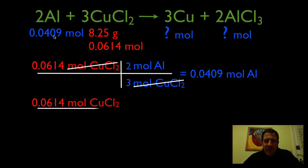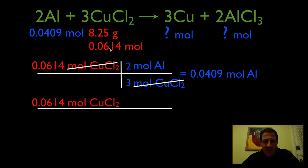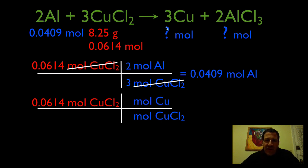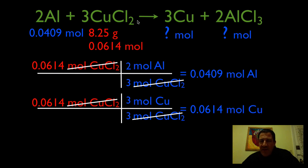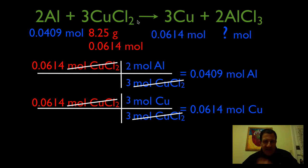Using the molar ratio again, we start with the 0.0614 moles of copper chloride. Moles of copper chloride goes in the bottom, moles of copper goes in the top. This is a three-to-three ratio, basically one-to-one. So the number of moles of copper chloride and the number of moles of copper produced are the same — 0.0614 moles of copper. Note they won't be the same mass because they have different molar masses.